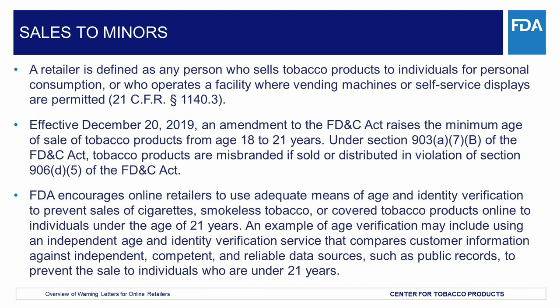FDA provides information about the increase in the federal minimum age of sale for tobacco products on its website. The Appropriations Act also directed FDA to issue a final rule to amend its regulations to update the minimum age-related requirements in Subpart B of 21 CFR Part 1140. Therefore, as part of this rulemaking, FDA is making conforming changes to its regulations to reflect, among other things, that the minimum age of sale is now 21 years of age. Currently, under Section 903(a)(7)(B) of the FD&C Act, tobacco products are misbranded if sold or distributed in violation of Section 906(d)(5) of the FD&C Act.